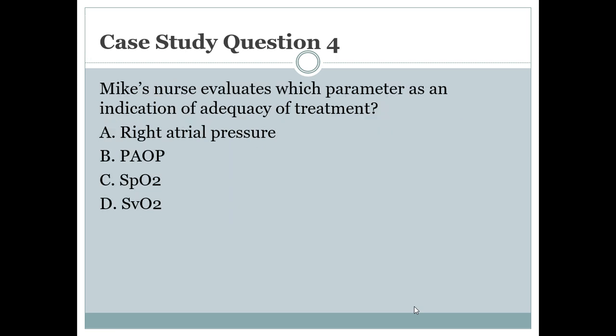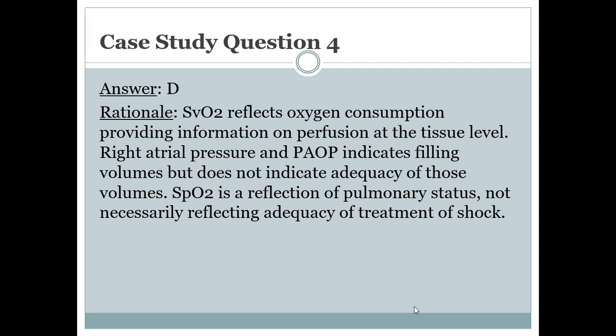Case study question 4: Mike's nurse evaluates which parameter as an indication of adequacy of treatment? The answer is SVO2. SVO2 reflects oxygen consumption, providing information on perfusion at the tissue level. Right atrial pressure and PAOP indicate filling volumes but not adequacy. SpO2 is a reflection of pulmonary status, not necessarily the adequacy of shock treatment.